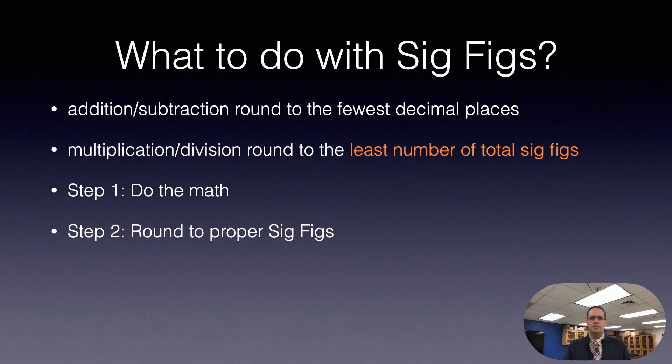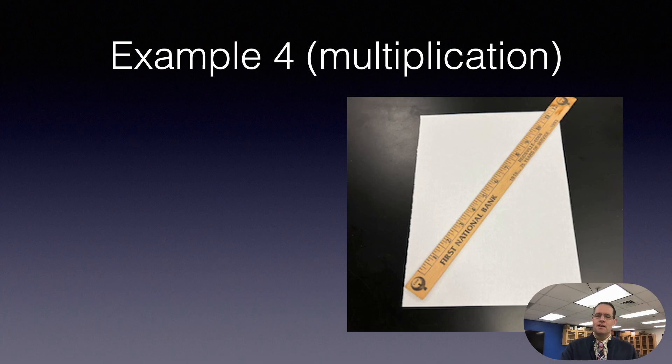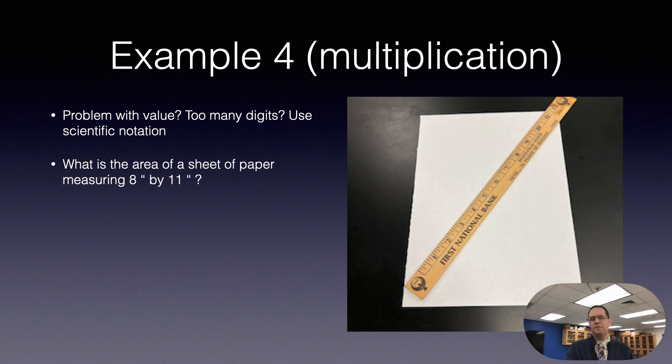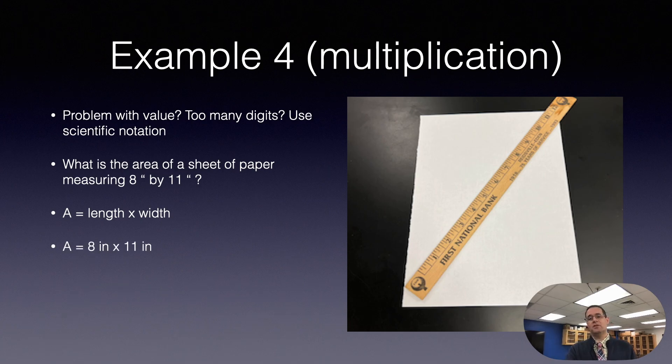What do you do with multiplication or division? You round to the least number of total significant figures. Let me show you how this works. Let's say we have this sheet of paper and we've got this really old ruler that's pretty much accurate up to the nearest inch. We want to know what is the area of this sheet of paper that measures 8 inches by 11 inches. The area is length times width, 8 inches times 11 inches. If you do this on your calculator, 8 times 11 is 88. So is that the answer? What do we do? Well, 8 is one significant figure, 11 is two significant figures.